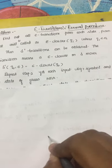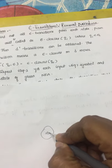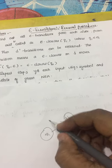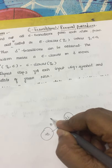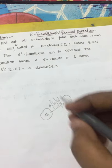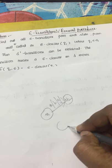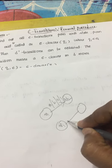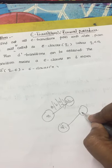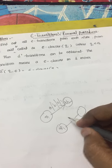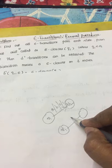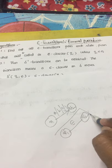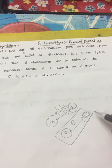Until now we have seen finite automata moving to other states by consuming some input symbol, either a or b or 0 or 1. But in case of epsilon transition, a state can move to another state by consuming no input symbol — that means epsilon. This is what the epsilon transition, or epsilon move, in finite automata.